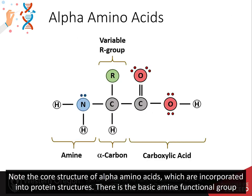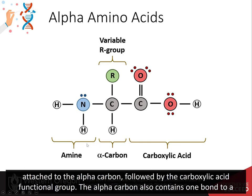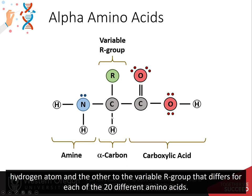Note the core structure of the alpha amino acids which are incorporated into protein structures. There is a basic amine functional group attached to the alpha carbon, followed by the carboxylic acid functional group. The alpha carbon also contains one bond to a hydrogen atom and the other to the variable R group that differs for each of the 20 different amino acids.